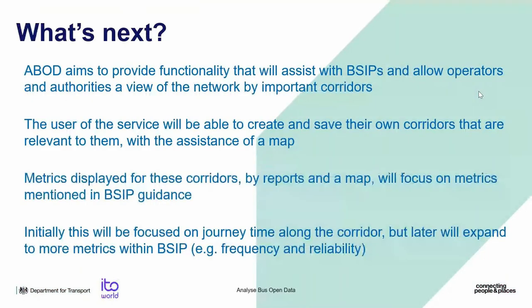What's next for Analyze Bus Open Data? It aims to provide functionality that will assist with Bus Service Improvement Plans and allow operators and authorities a view of the network by important corridors. Users will be able to create and save their own corridors using a map — for example a selection of stops along a main road including roundabouts, junctions and multiple traffic light systems. It will tell you along that road where delays are mostly occurring, giving you a saved corridor to look at over a required period of time.